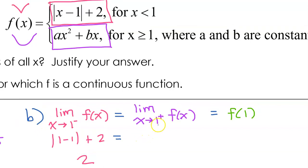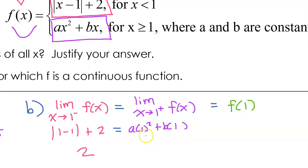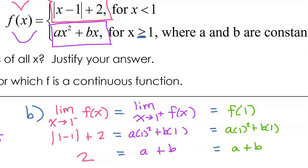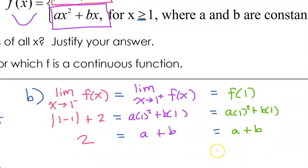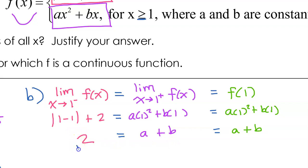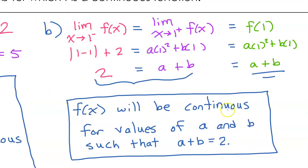We can also find the right-hand limit by direct substitution. Plugging 1 into ax squared plus bx gives a times 1 squared plus b times 1, which is just a plus b. Because of the "or equal to" in the definition, the value of the function at x equals 1 is also ax squared plus bx, giving the same result of a plus b. So the final answer is: f(x) will be continuous for values of a and b such that a plus b equals 2.